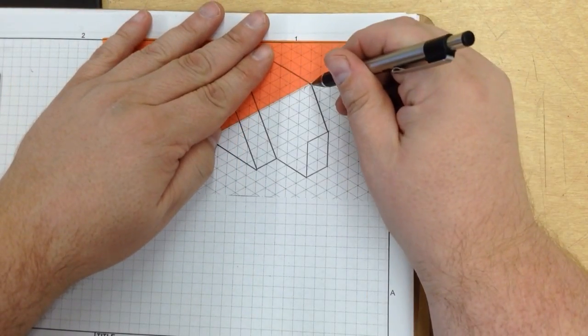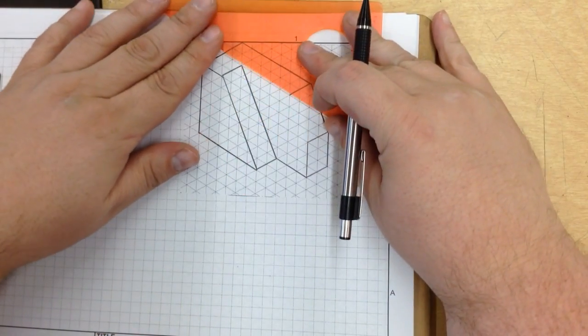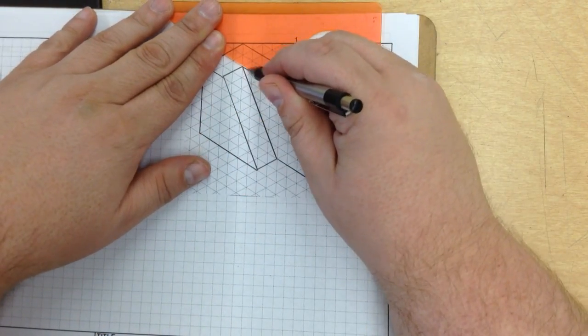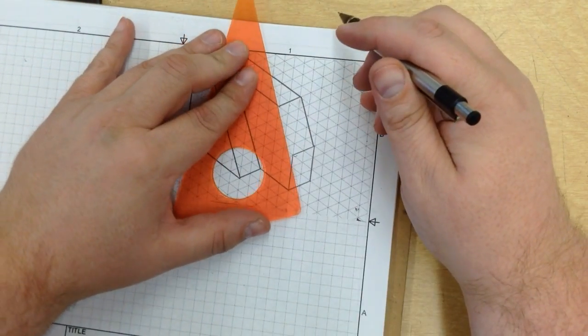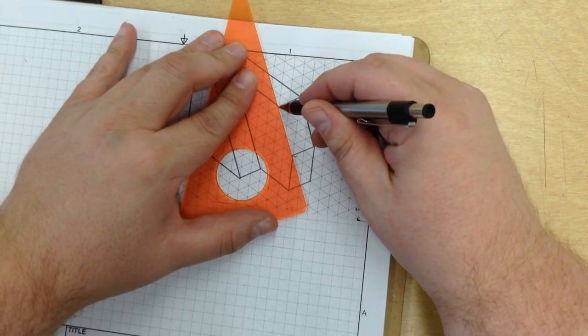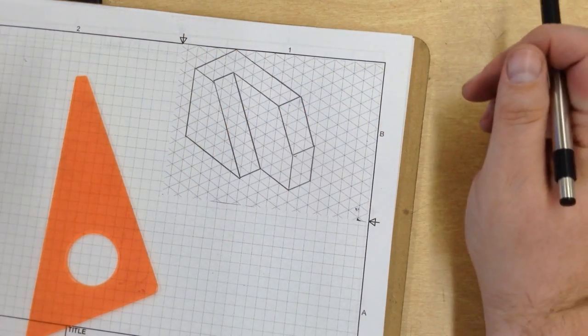And let's see, goes 2 in from here. Connect the straight, and then that shape right there. Okay, so that gives us our isometric drawing.